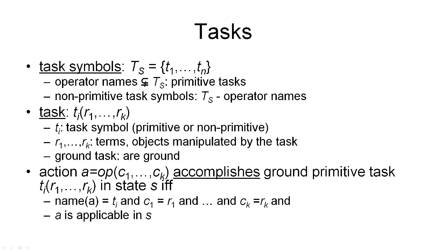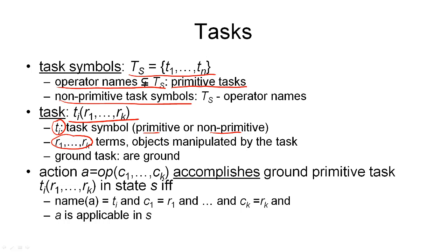Now we can formally define what we mean by a task. First, we need a set of symbols to give unique names to our tasks — the task symbols given by the set TS, consisting of T1 through Tn. Our operator names must be a subset of our set of task symbols. If for a given task symbol we also have a corresponding operator name, we call it a primitive task symbol; otherwise it is a non-primitive task symbol. A task is a syntactic expression consisting of a task symbol Ti — either primitive or non-primitive — and a set of arguments R1 through Rk, which are terms representing objects manipulated by the task.